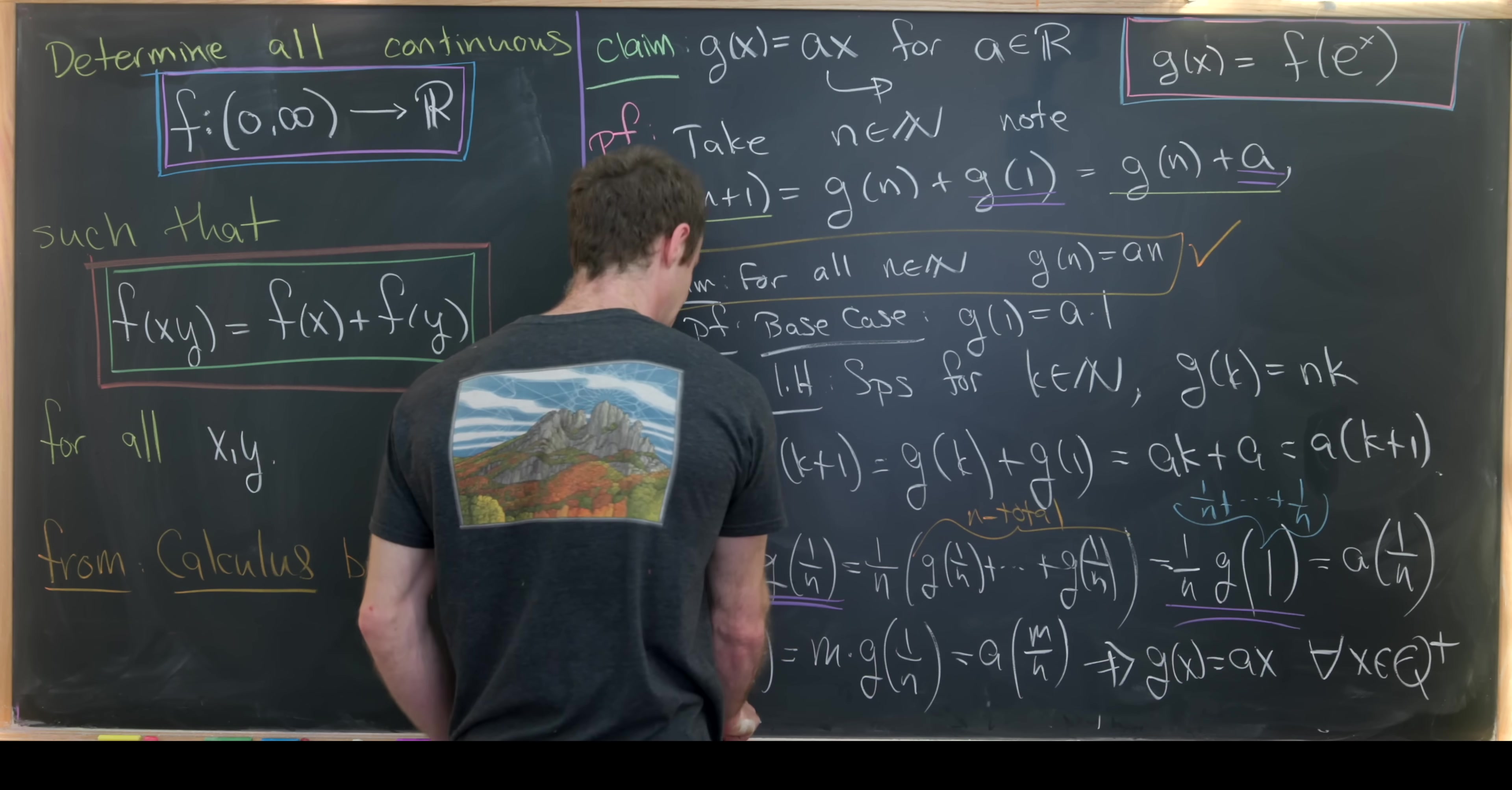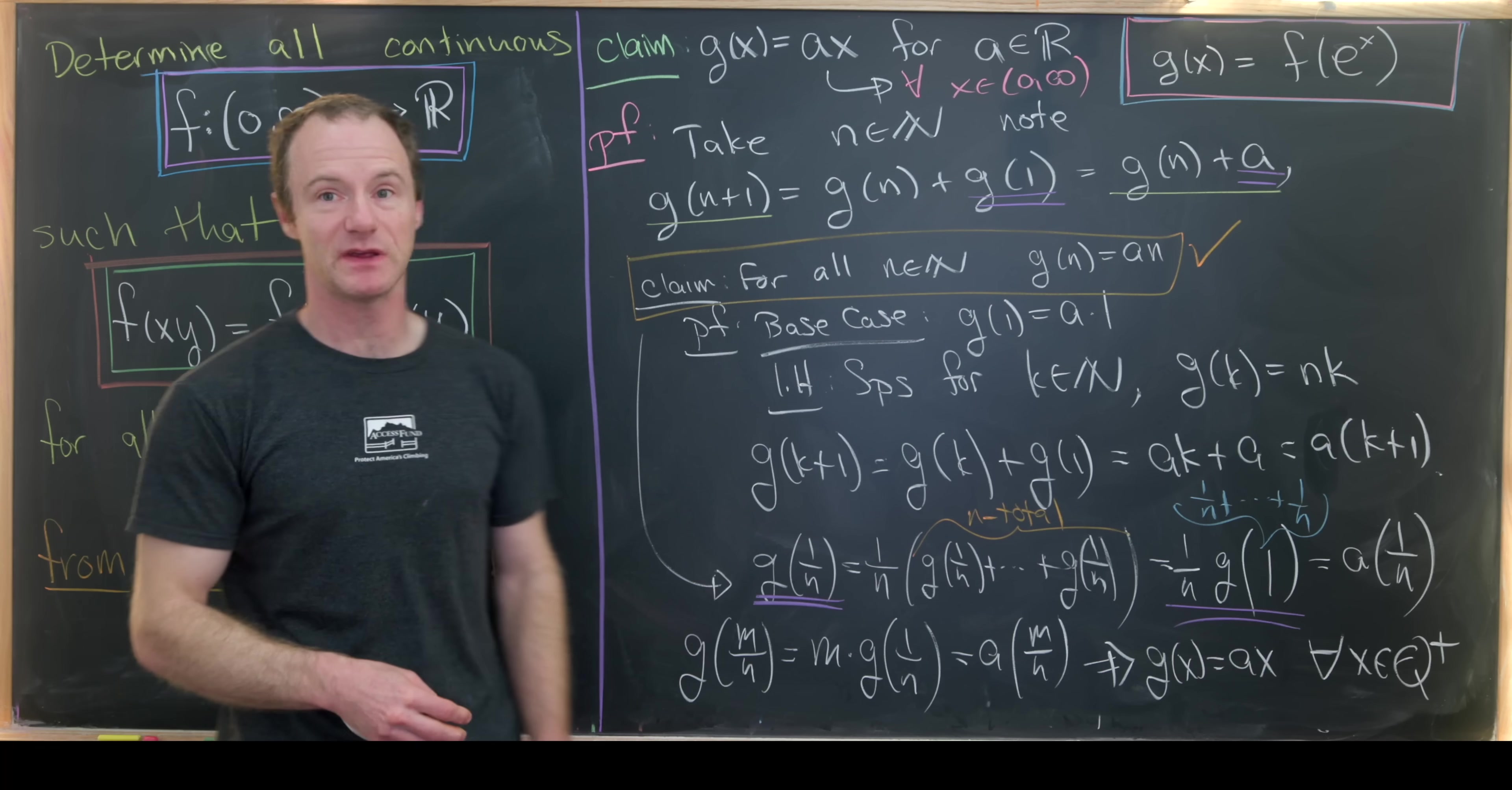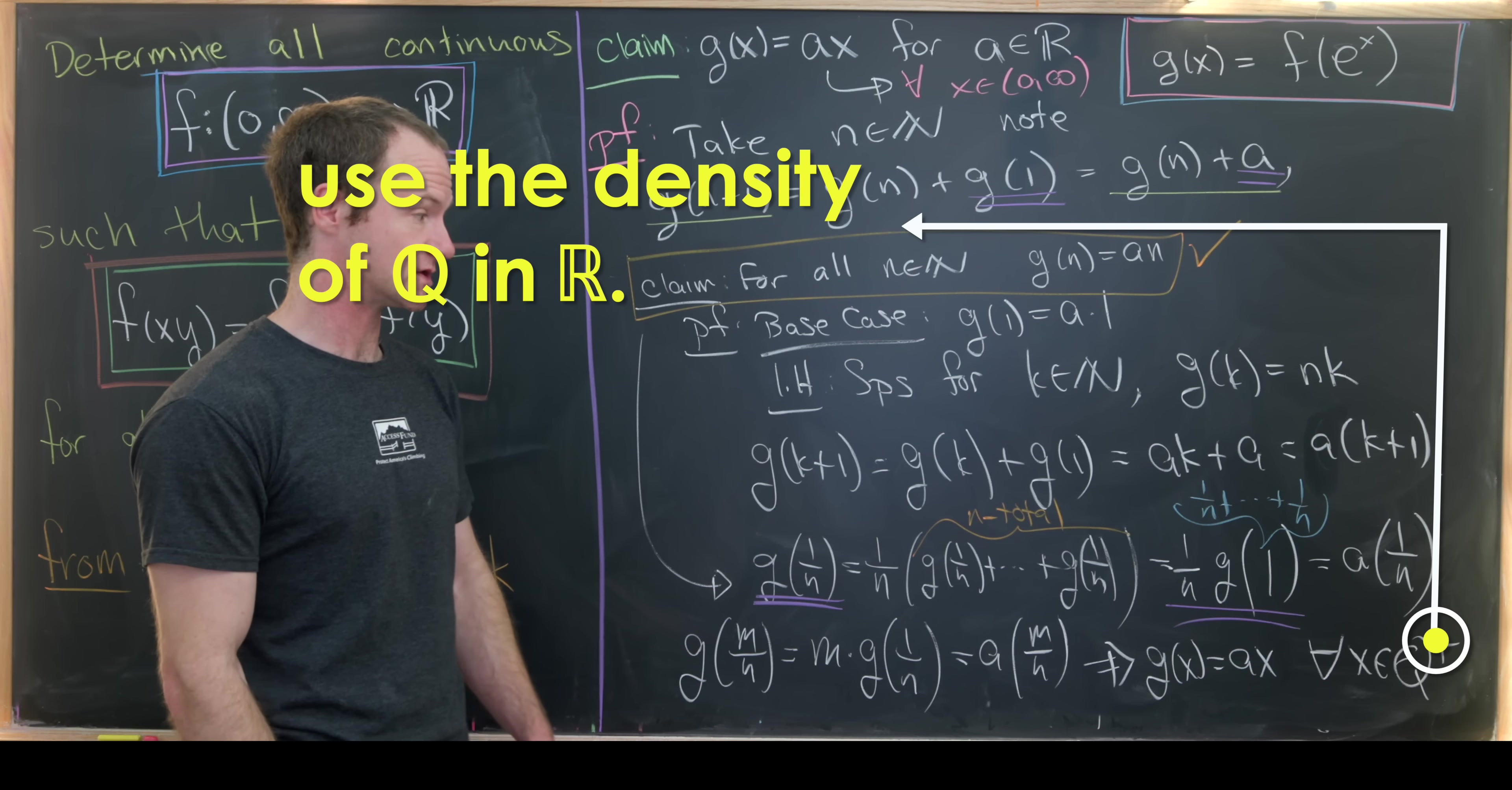So how do we move that from all positive rational numbers to all real numbers? Let's just recall that this has to hold for all positive real numbers x. Well, the movement from all positive rational numbers to all real numbers is immediate because we have this condition that f was continuous and thus g is continuous. I won't write down the details for that, but I think it'd be a nice homework exercise if you want to.